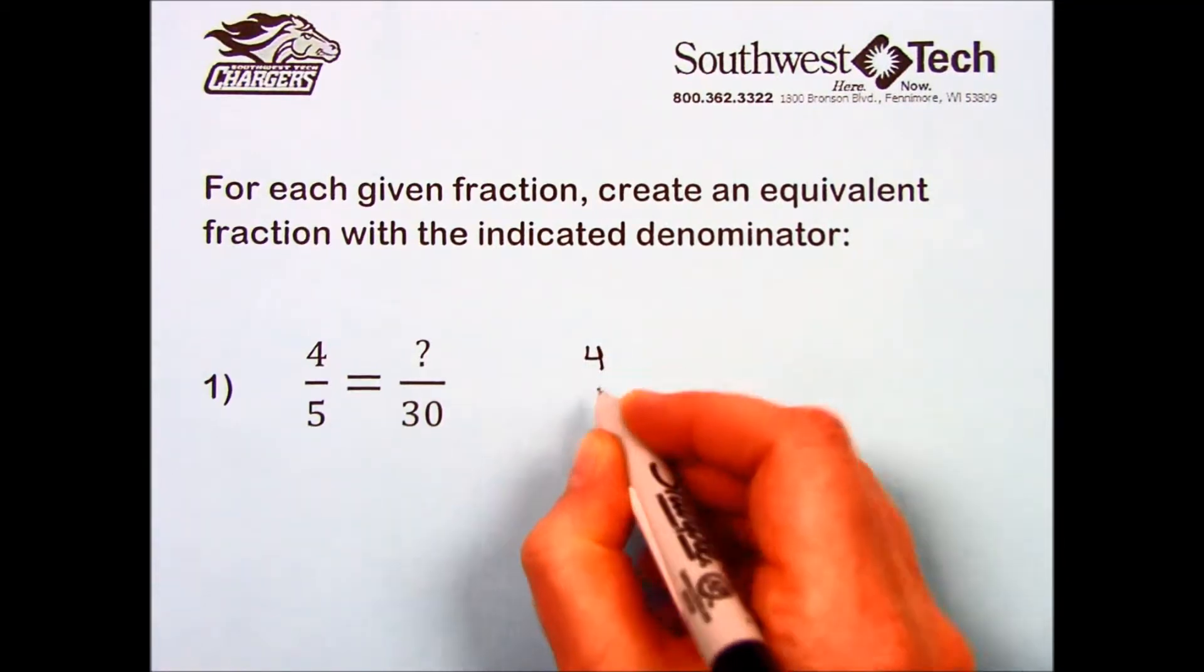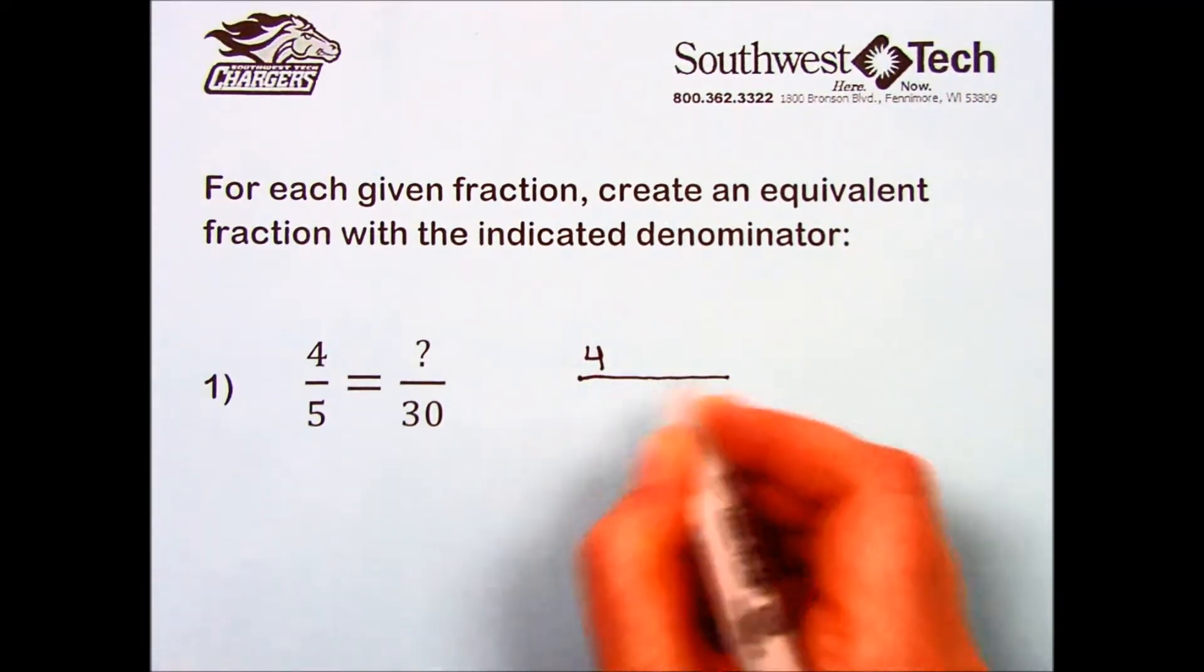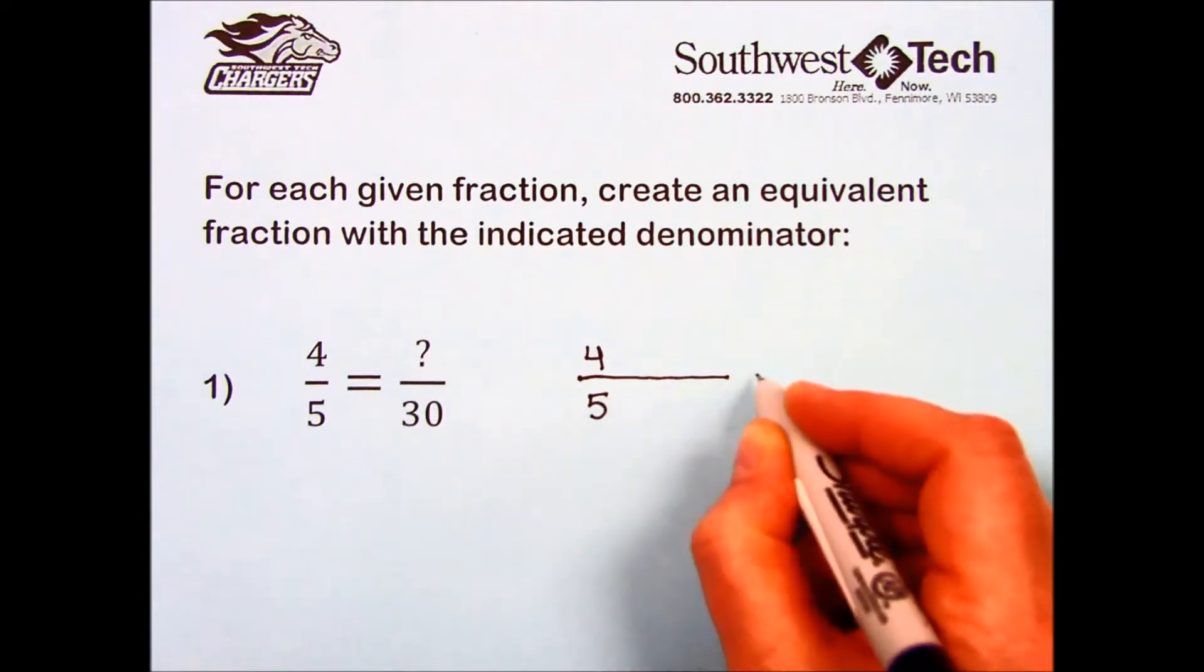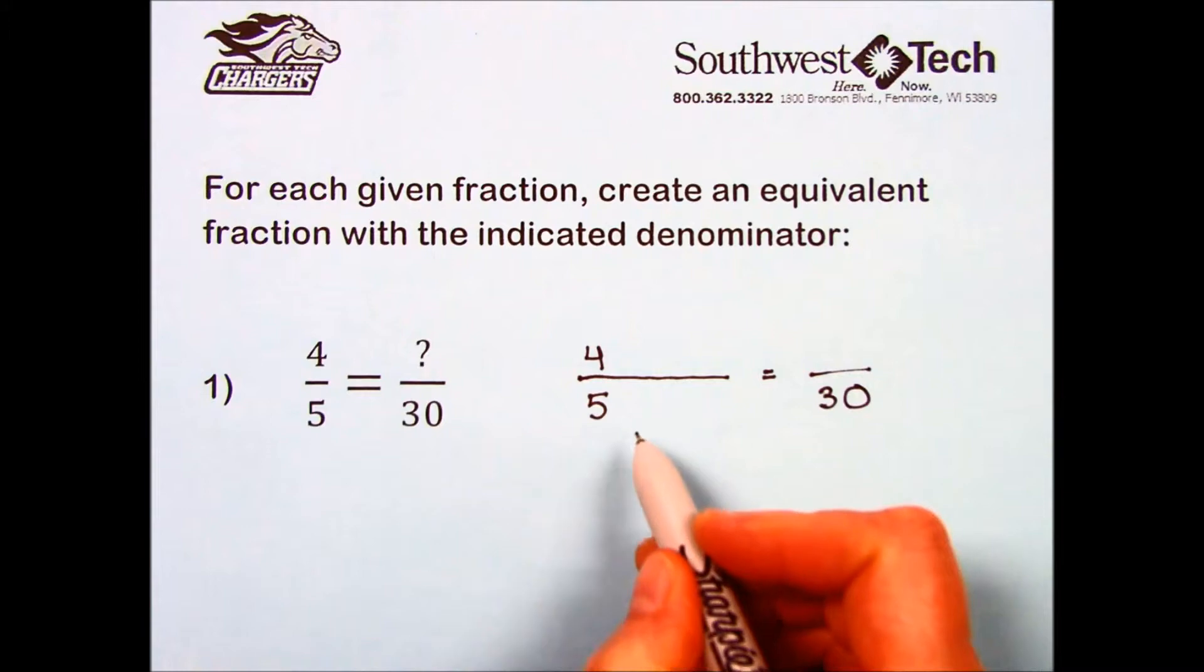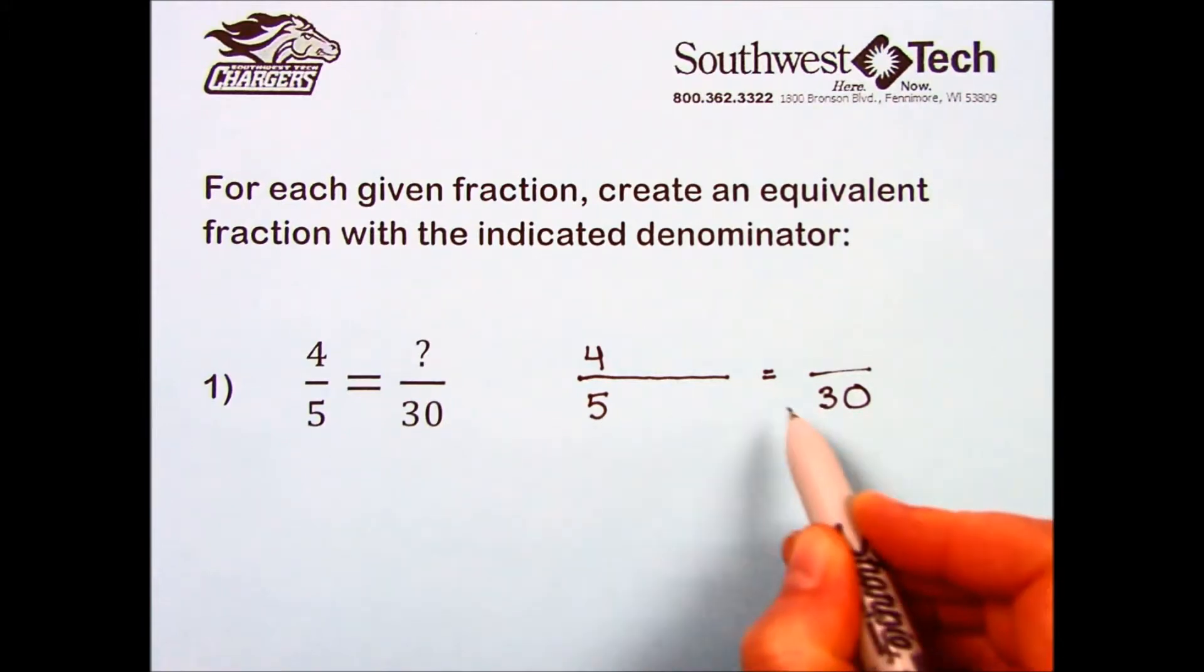I start by writing my fraction and leaving extra space. Then I ask myself, 5 times what will give me this denominator of 30?